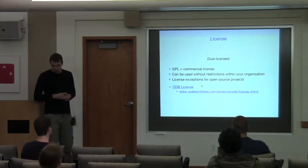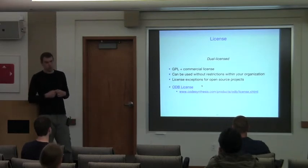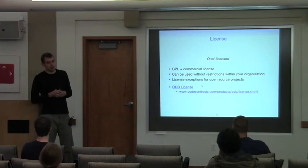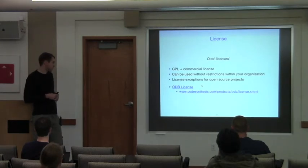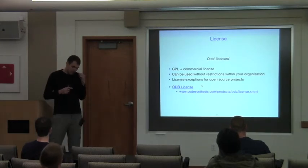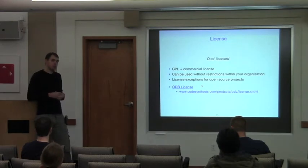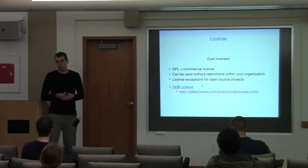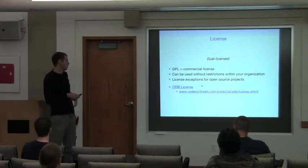No talk about an open source project will be complete without mentioning the license. ODB is dual licensed under the GPL and a commercial license. If you are using an ODB-based application within your organization — for example, by running it on your company's servers — then you don't need to worry about any of the GPL restrictions. We also realized that neither option is particularly suitable for other open source projects using a more liberal license, so we decided to grant a licensing exception to any open source project interested in using ODB. You can read more on the ODB licensing page.